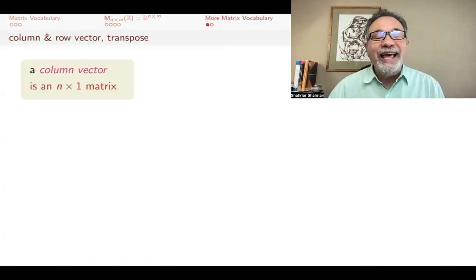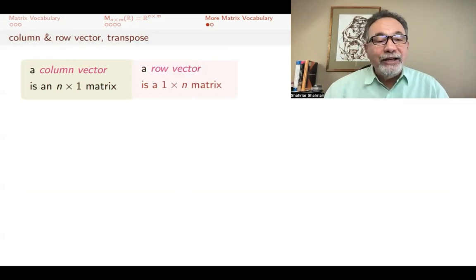A column vector is an n by one vector—n rows, one column. A row vector, on the other hand, is a one by n matrix—one row, but n entries.